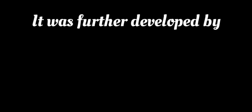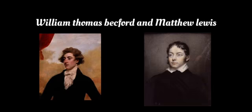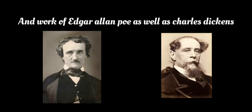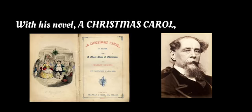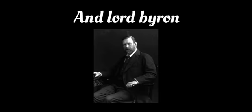The literary genre originated in England in the second half of the 18th century. Following Walpole, it was further developed by Ann Radcliffe, William Beckford, and Matthew Lewis. The genre had much success in the 19th century, as seen in prose by Mary Shelley's Frankenstein and the work of Edgar Allan Poe, as well as Charles Dickens with his novel A Christmas Carol, and in poetry in the work of Samuel Taylor Coleridge and Lord Byron.